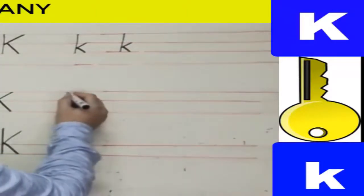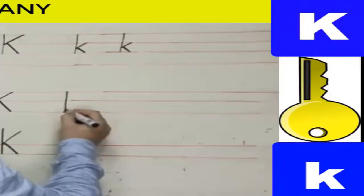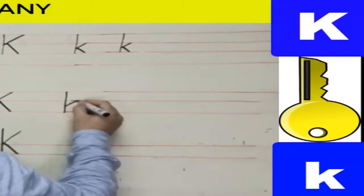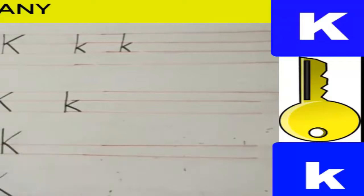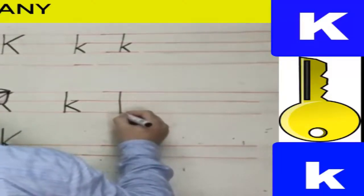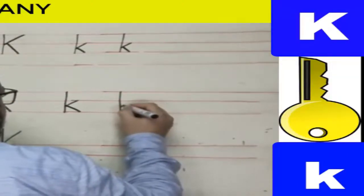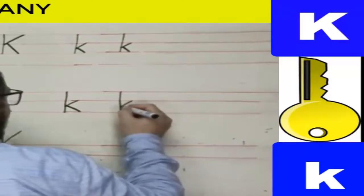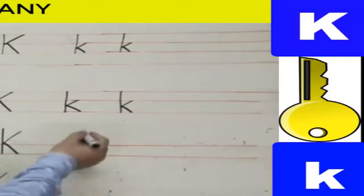When writing lowercase k on three lines, I start at the top, go down, and between the two middle lines make one diagonal line to the second line and another diagonal to the third line. Again: start at the top, go down, then between the two lines go up to the second line and down to the third line. That's small k.